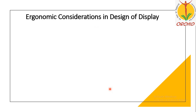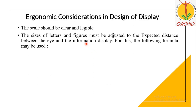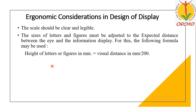Now we will see the ergonomic considerations in the design of displays. The scale used for the display should be clear and legible. The sizes of letters and figures must be adjusted to the expected distance between the eye and the display. The height of a letter or figure in millimeters equals the visual distance in millimeters divided by 200.